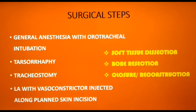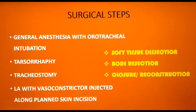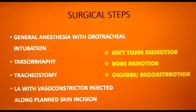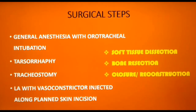The surgery is performed under general anesthesia with orotracheal intubation. If the eye is to be preserved, the eyelids are sutured — a procedure called tarsoraphy. A tracheostomy is then done to secure the airway for the post-operative period. Local anesthesia with vasoconstrictor is injected along the planned skin incisions. The surgery is considered in three stages: soft tissue dissection and bone exposure, bone resection, and closure or reconstruction.